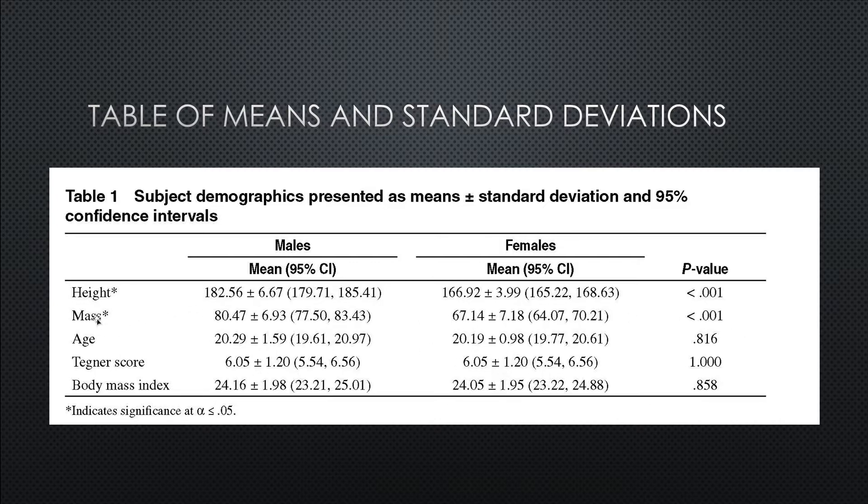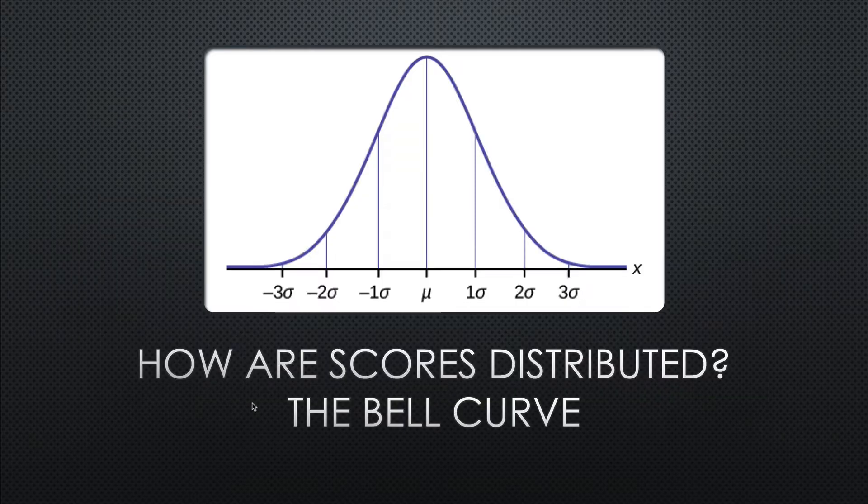Another measure they did, they wanted to see if the subjects, the men and the women, were significantly different from one another in these measures. And they found that in both height and weight, the women were significantly different than the men. Makes sense, right? They were lighter and shorter in stature in this population.